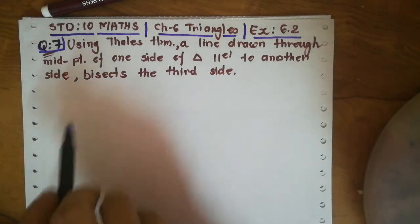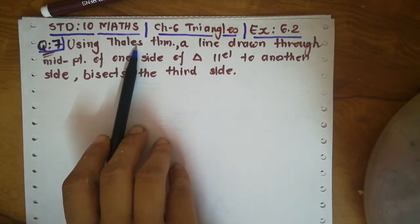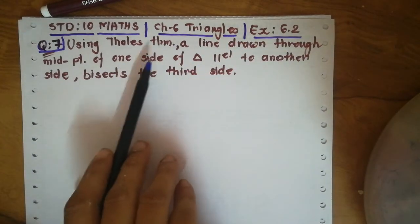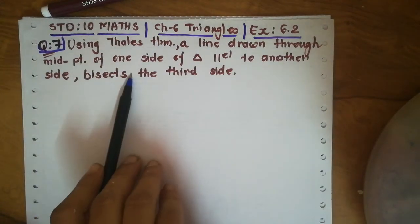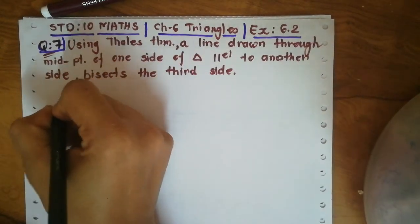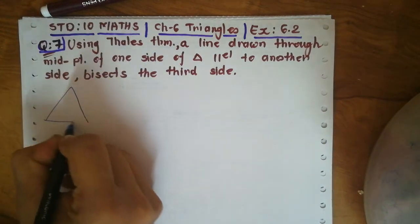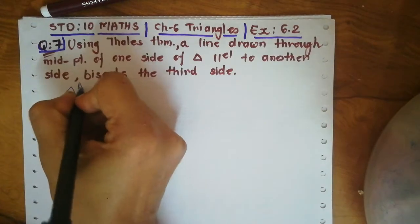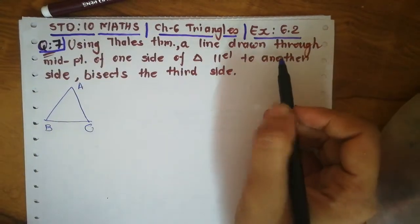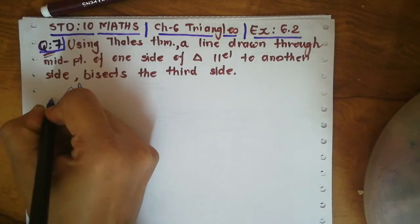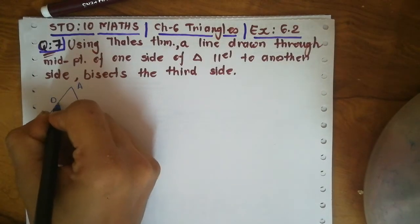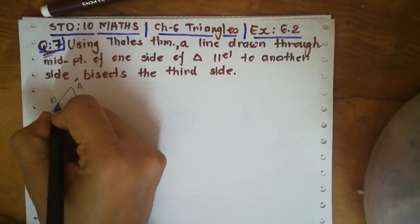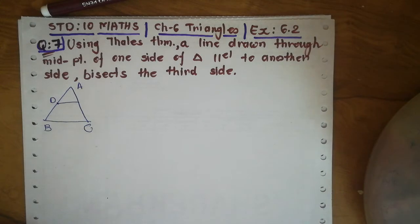Let's start. Using the Thales theorem, that means BPT theorem, a line drawn through the midpoint of one side of a triangle, parallel to another side, bisects the third side. In triangle ABC, a line drawn through the midpoint D of side AB is parallel to another side BC.